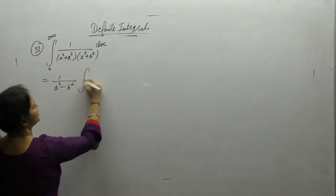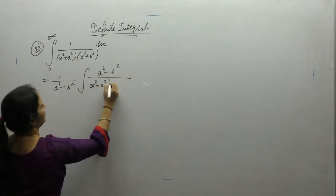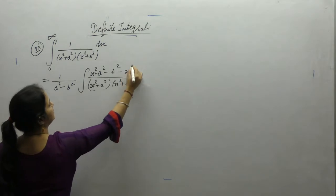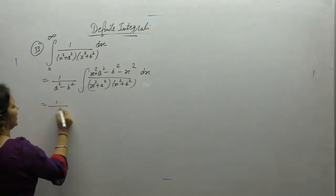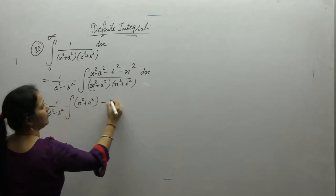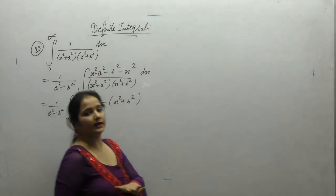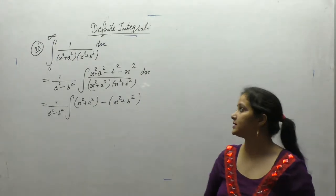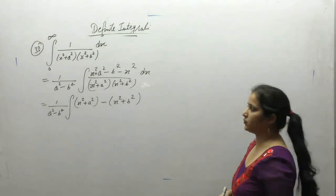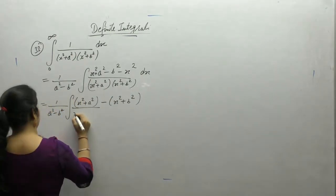In the numerator, first multiply and divide by (a² - b²), then add and subtract x² to match the terms in the denominator. This gives 1/(a² - b²) times [1/(x² + b²) minus 1/(x² + a²)]. Now separate the terms.